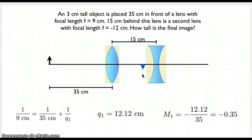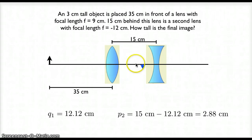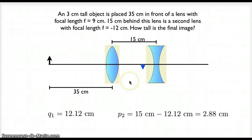Now I've gone through the first lens, so I want to go through the same process for the second lens. The first thing I need to figure out is my object distance. The image from lens number 1 will be my object for lens number 2. This image is to the left of lens number 2, so this should be a positive object distance. This image is 12.12 centimeters past lens number 1. The distance from lens number 1 to lens number 2 is 15 centimeters, so my object distance for lens number 2 is 2.88 centimeters. It makes sense that this is positive because it is on the virtual side of lens number 2.